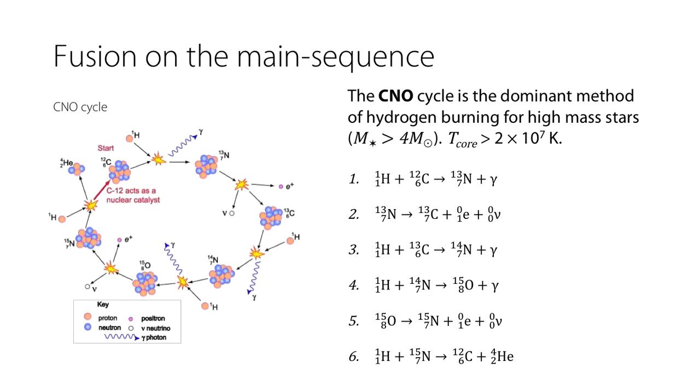Which then gets a proton and goes to nitrogen-14 and then another proton hits it and goes to oxygen-15 and then it decays to nitrogen-15 and then another hydrogen hits and makes it carbon-12 again plus a helium nucleus.